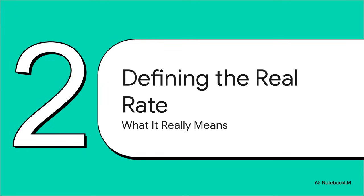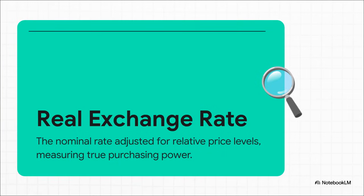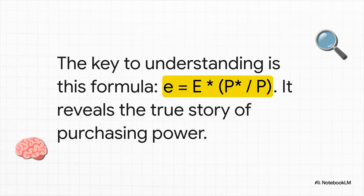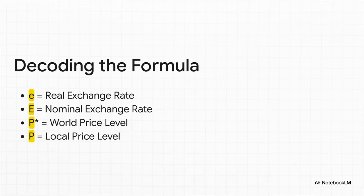So let's break down what the real exchange rate actually is. Here's the big idea: it's not just about swapping one currency for another, like trading a dollar for a euro. It's about swapping purchasing power. It takes that simple exchange rate and adjusts it based on how much stuff actually costs in two different countries — basically, the number that tells you what you can really buy with your money. And it all boils down to one pretty elegant formula. It might look a little scary at first, but it's straightforward once we break down what each letter means. The little e is our goal — that's the real exchange rate we're trying to figure out. The big E is the nominal exchange rate, the one you see on the news every day. P* is the price level abroad — think of it as the world price. And P is the price level right here at home.